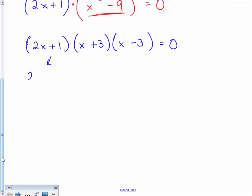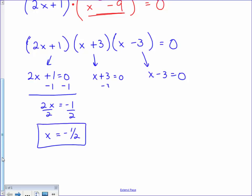Now I'd set each of these factors equal to 0 and then solve each one. This one I would subtract the 1. I'd have 2x equals negative 1. Divide by 2. So I'd have x equals negative 1 half. This one subtract over the 3. You'd have x equals negative 3. And then finally add over the 3 here and you would have x equals 3. So this particular problem would have three separate answers. By now you're familiar with how to enter them online. You just separate them with commas.